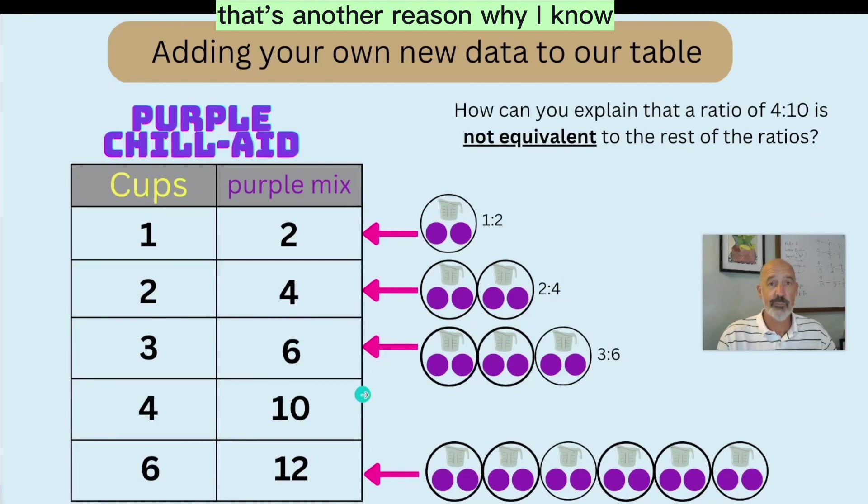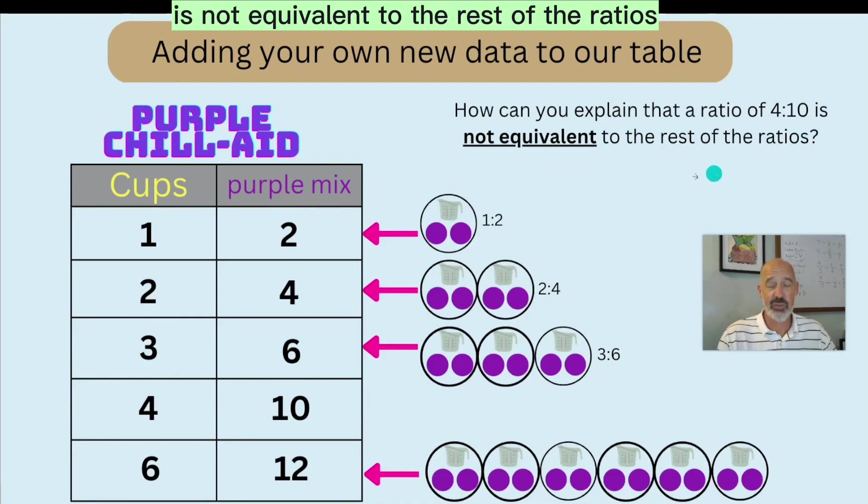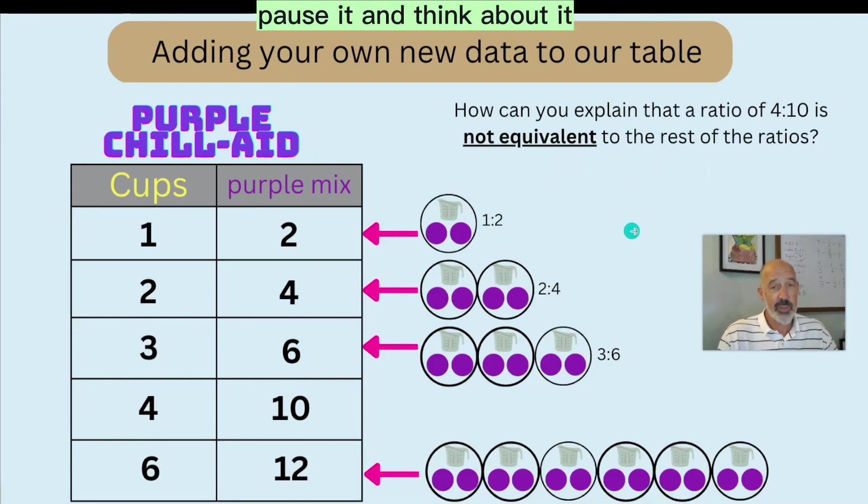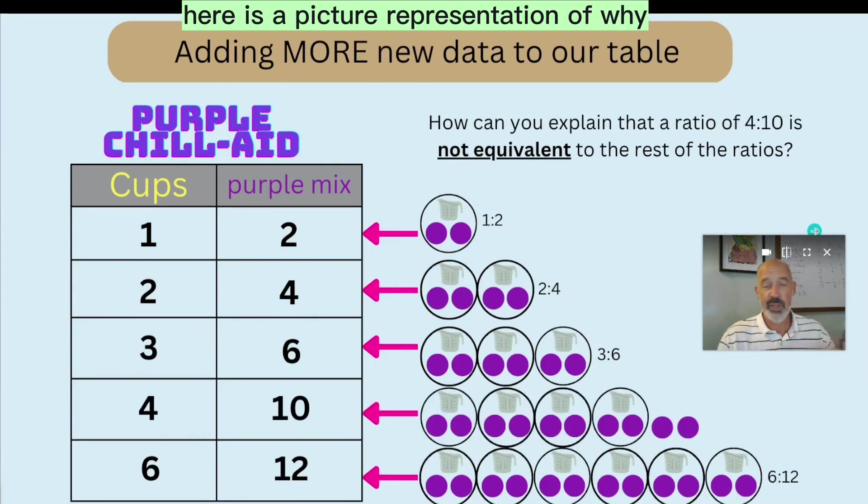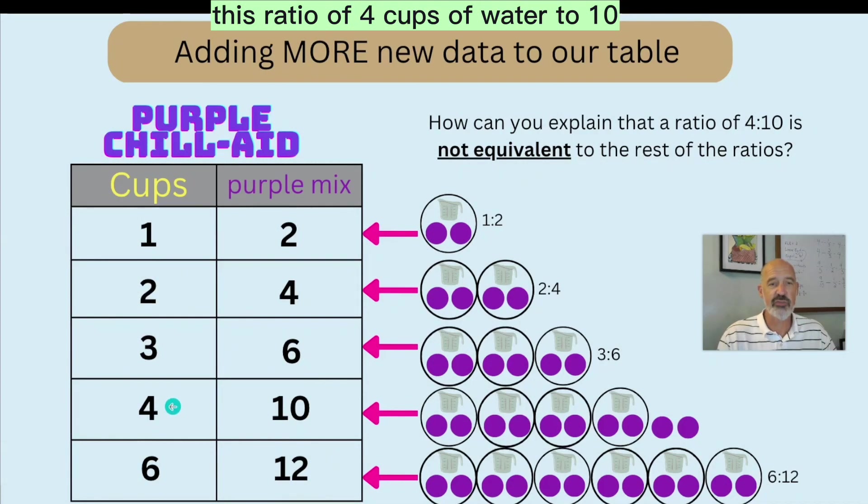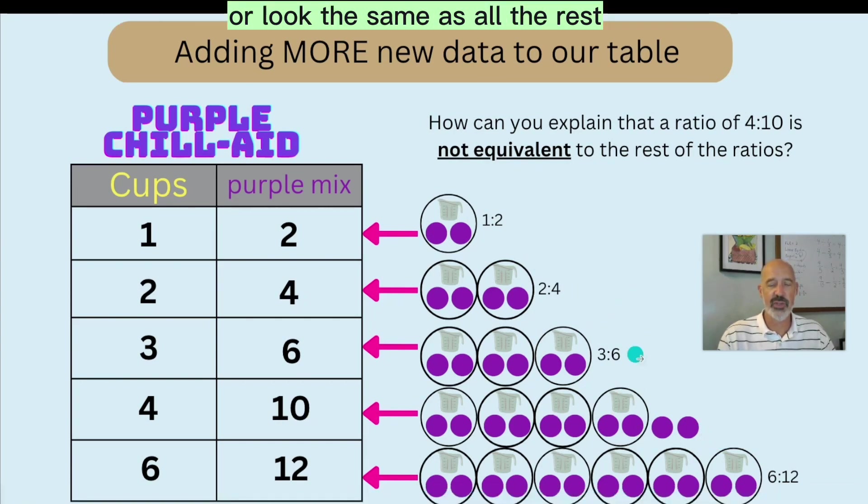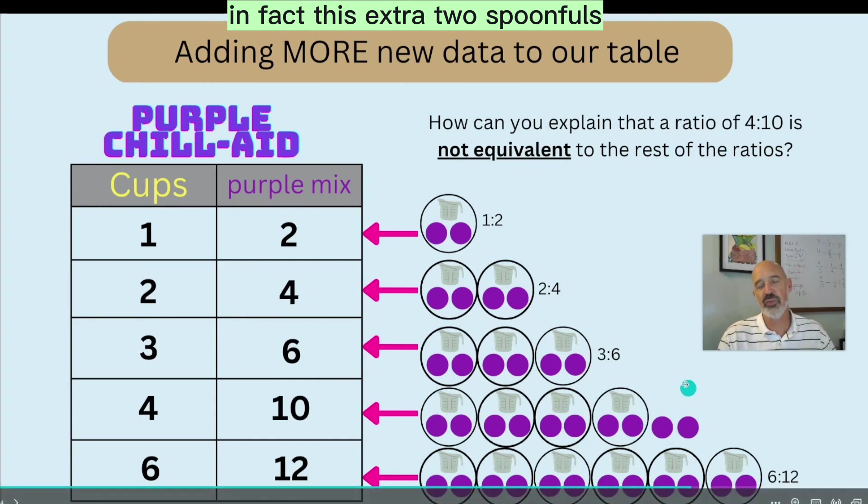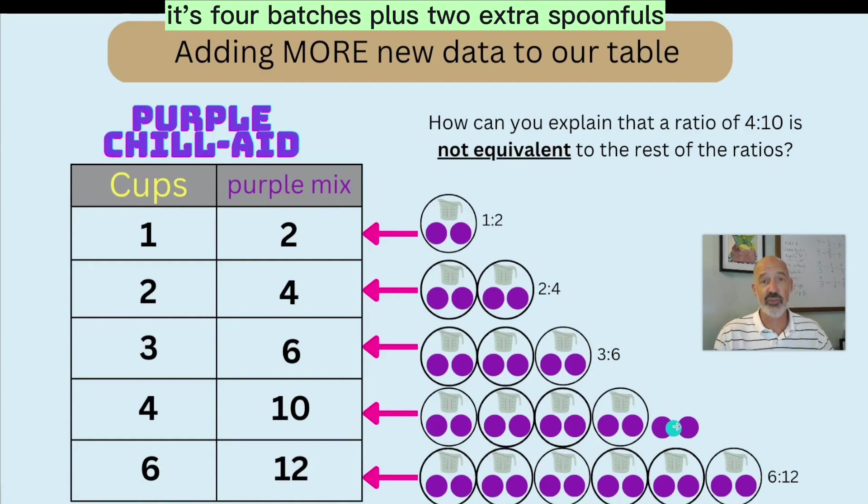That's another reason why I know, and maybe you can explain now in your own words, how can you explain that the ratio of four to 10 is not equivalent to the rest of the ratios? Pause it and think about it. Pause it and then begin playing again once you know you can describe why four to 10 doesn't work. Great. And now here is a picture representation of why this ratio of four cups of water to 10 spoonfuls of purple mix is not going to taste the same or look the same as all the rest. And in fact, this extra two spoonfuls is going to make this drink a little bit stronger than the other ones because it's not just four batches. It's four batches plus two extra spoonfuls.